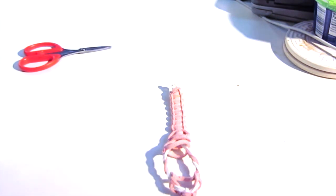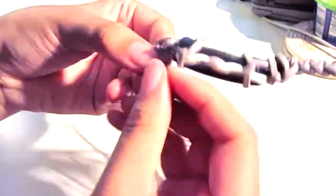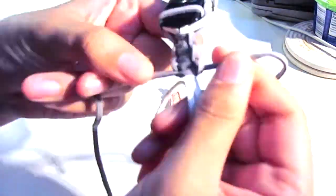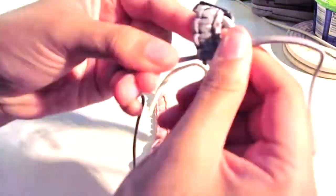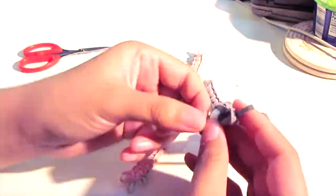But yeah, once you get it then it's pretty easy going because then you just continue with the square knot all the way down. The white cord, probably another 22 or so.